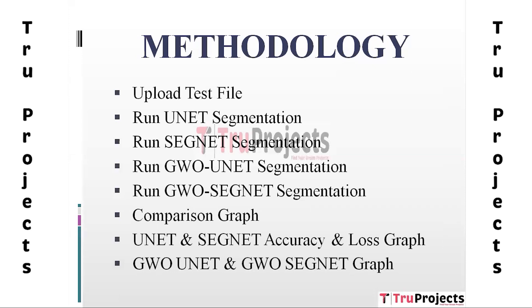SegNet is an encoder-decoder architecture that uses pixel-wise classification for segmentation. It aims to strike a balance between accuracy and memory efficiency, making it suitable for real-time applications.